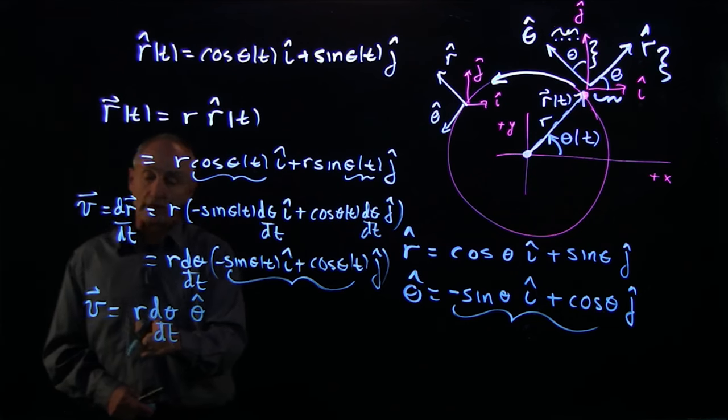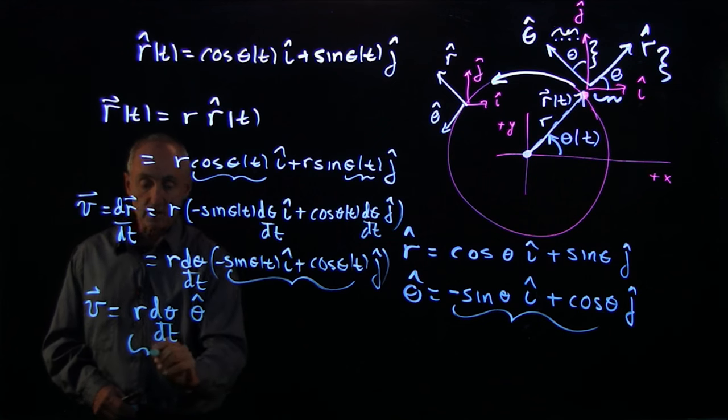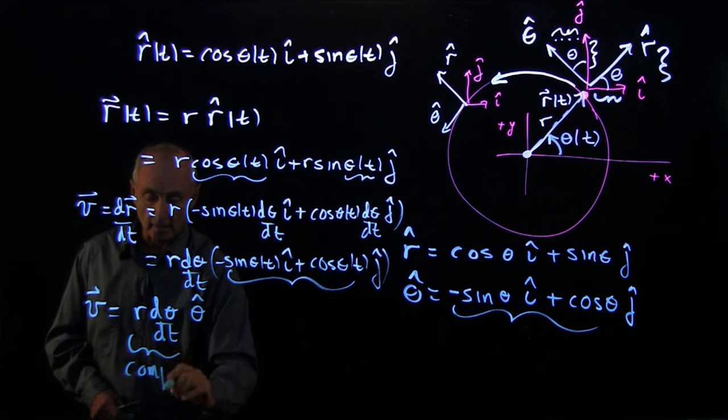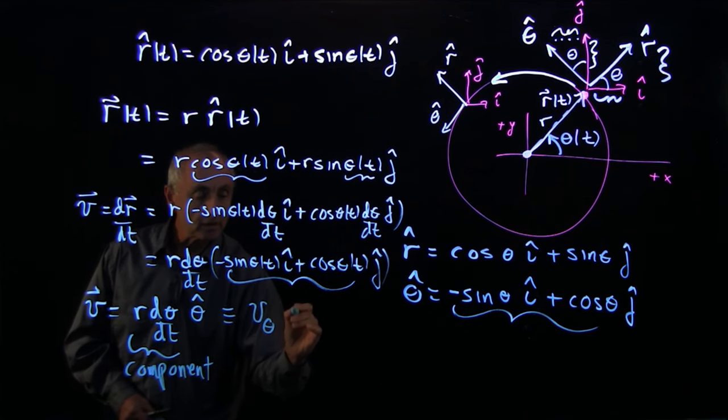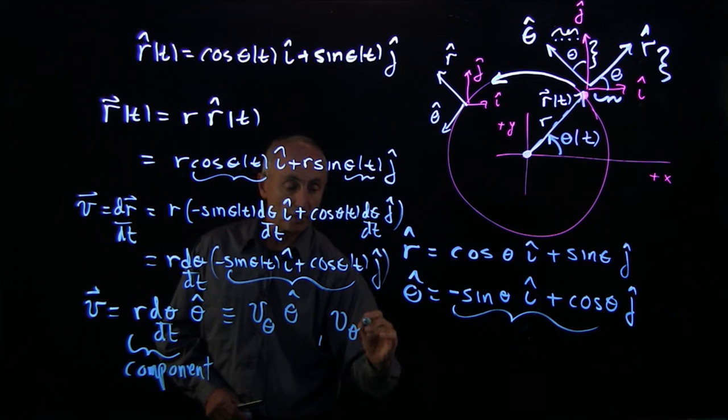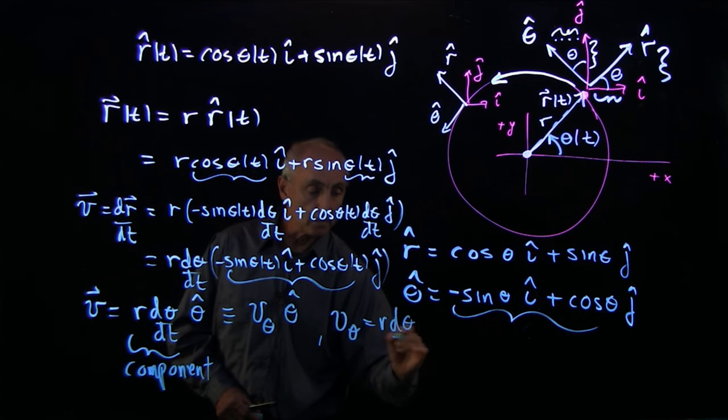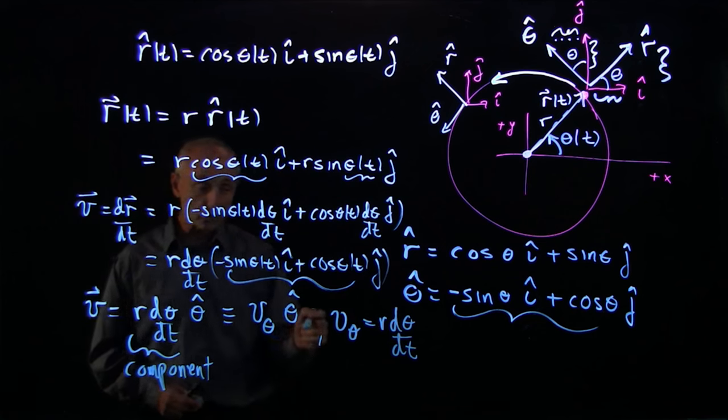When we write a vector like this, it's pointing tangentially in the theta hat direction. And this part is the component. So often we can use a notation v theta theta hat, where v theta is the component r d theta dt. Now, this component can be positive or negative or zero.